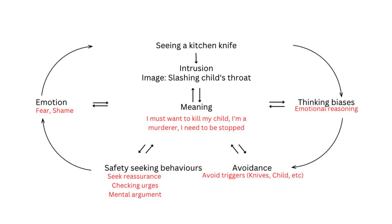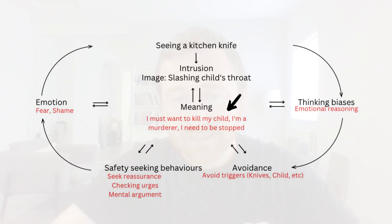In this model we can see that a person is presented with a trigger — in this instance, seeing a kitchen knife — and they have an intrusive thought about murdering one of their children, slashing their throat. It could be at the level of an urge or a verbally constructed thought. Rather than just dismissing it, they attribute meaning to it: 'Having this thought means I must want to kill my child — I'm a murderer, I need to be stopped, I need to be arrested.'